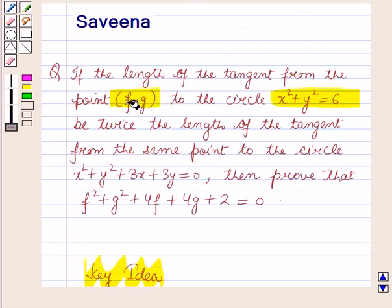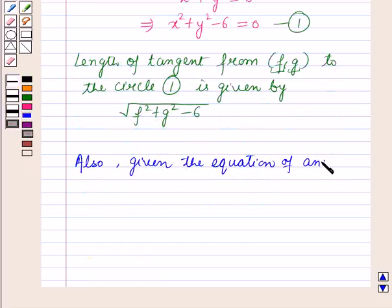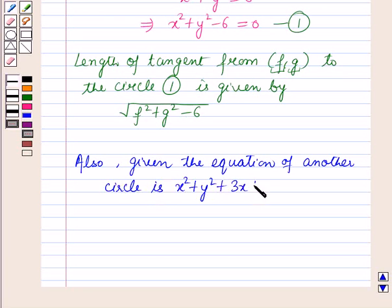Now in the second case we have to find the length of the tangent from the same point to the second circle. The equation of the other circle is x² + y² + 3x + 3y = 0. Let us name it as equation 2.